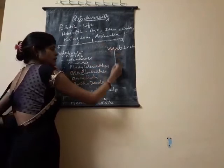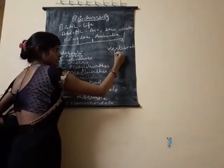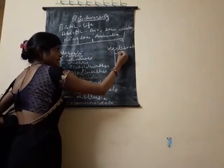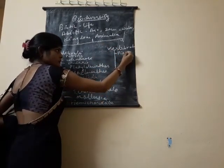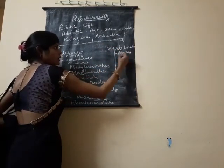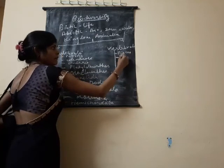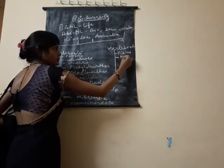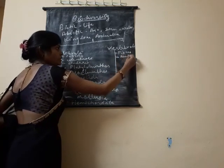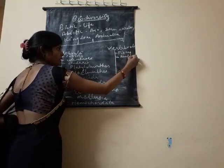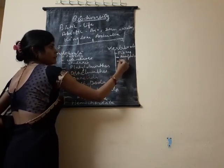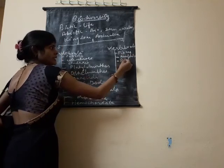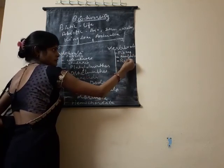Vertebrates have five classes. Pisces, which includes fishes. Amphibia, in which all organisms live both on land and in water. And Reptilia, which includes snakes and lizards.